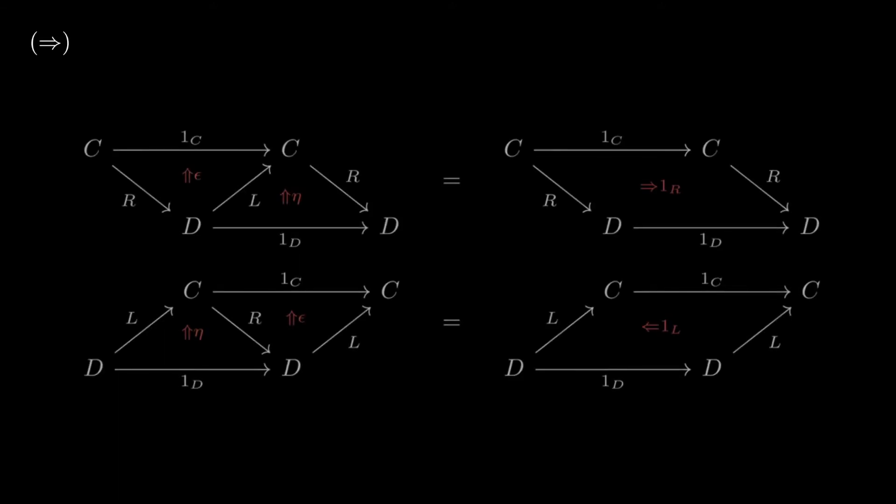Before proving, let's just recall the triangle identities for an adjunction. These will give us the ability to collapse diagrams in our diagram chases. Okay, so these are those.